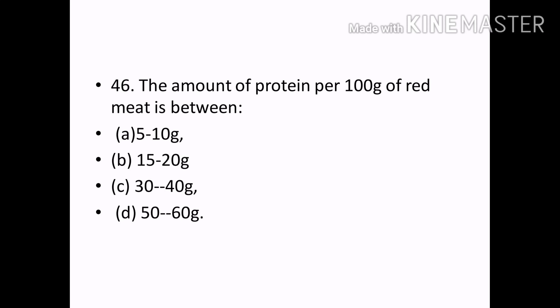The amount of protein per 100 gram of red meat is between: Options — 5 to 10 gram, 15 to 20 gram, 30 to 40 gram, 50 to 60 gram. Correct answer: 15 to 20 gram.